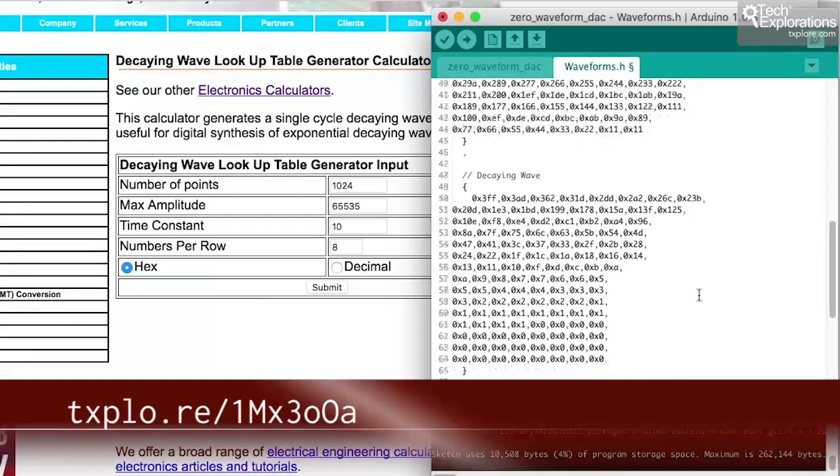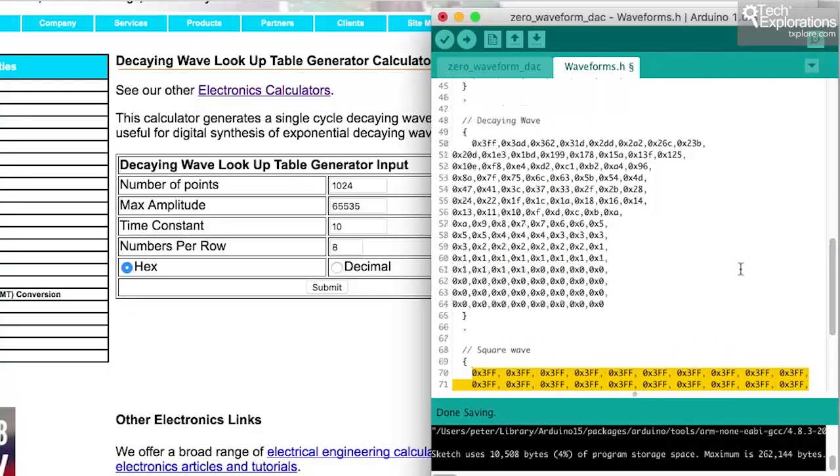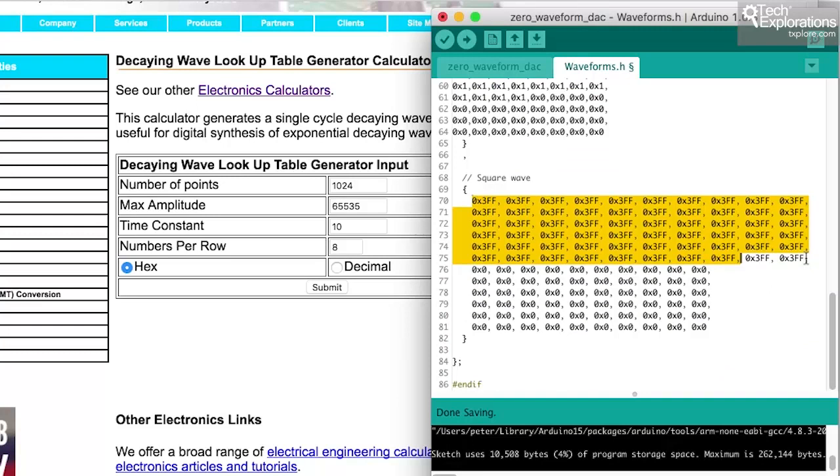And as far as the last one, the square wave is concerned, it was pretty easy. I just did this manually. The other one is half the period to be at high, and the other half to be at low.